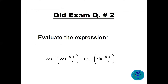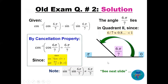Question two: evaluate cosine inverse of cosine(6π/7) minus sine inverse of sine(6π/7). The angle 6π/7 lies in quadrant 2 — if you divide π into 7 parts and take 6 of them, the angle sits just before π. For the cosine inverse, since 6π/7 is between 0 and π, the cancellation property applies directly, giving 6π/7.